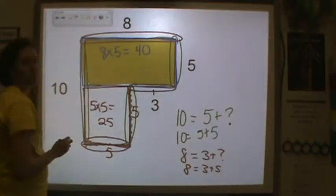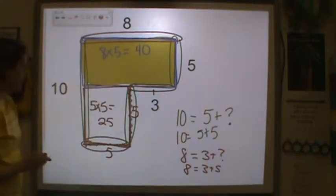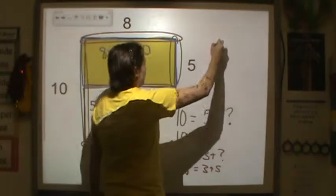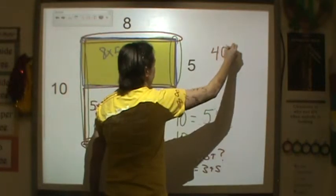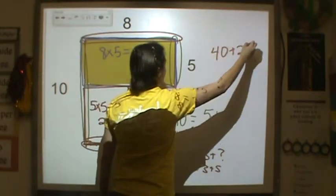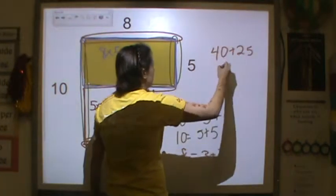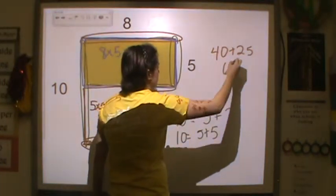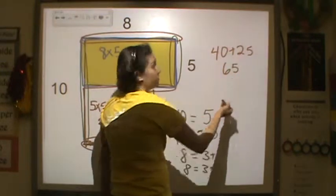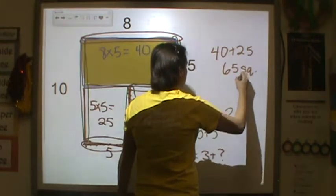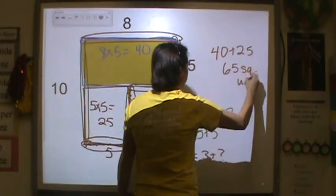The last step was to put them together. 40 plus 25 is equal to 65, and since we're finding area, that's 65 square units.